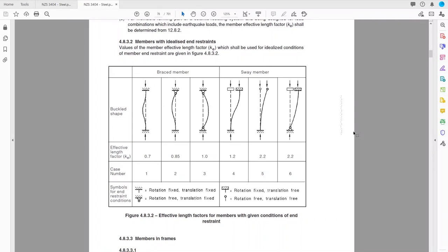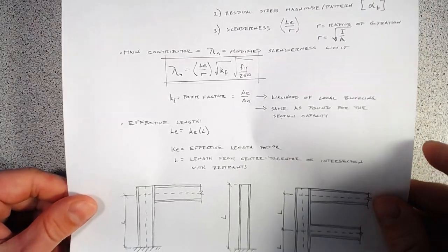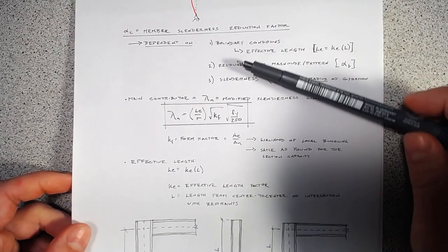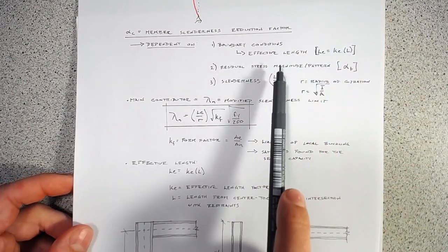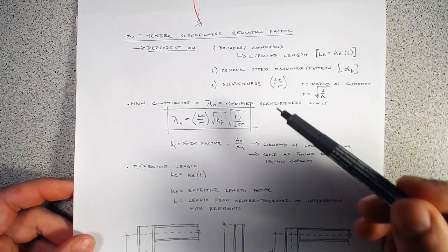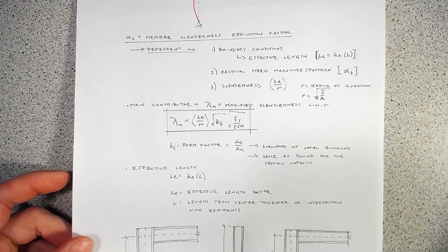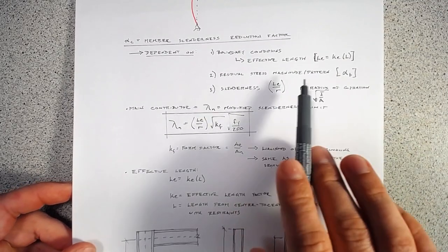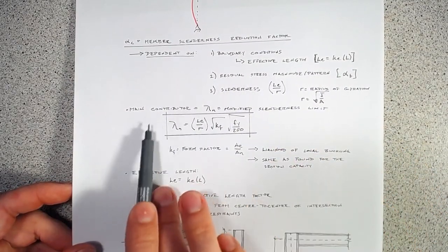To recap: we're trying to find alpha_c and understand what it depends on. We've covered boundary conditions and slenderness ratio. The radius of gyration r is dependent on whichever section we're analyzing. We've determined how to find k_e and L. Now let's look at the residual stress pattern and lambda_n in more detail.